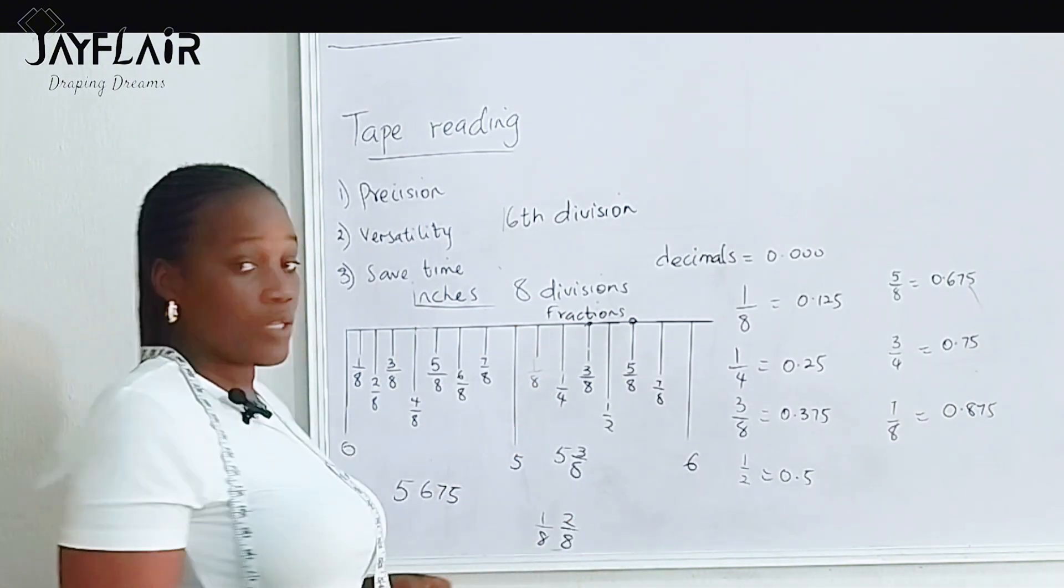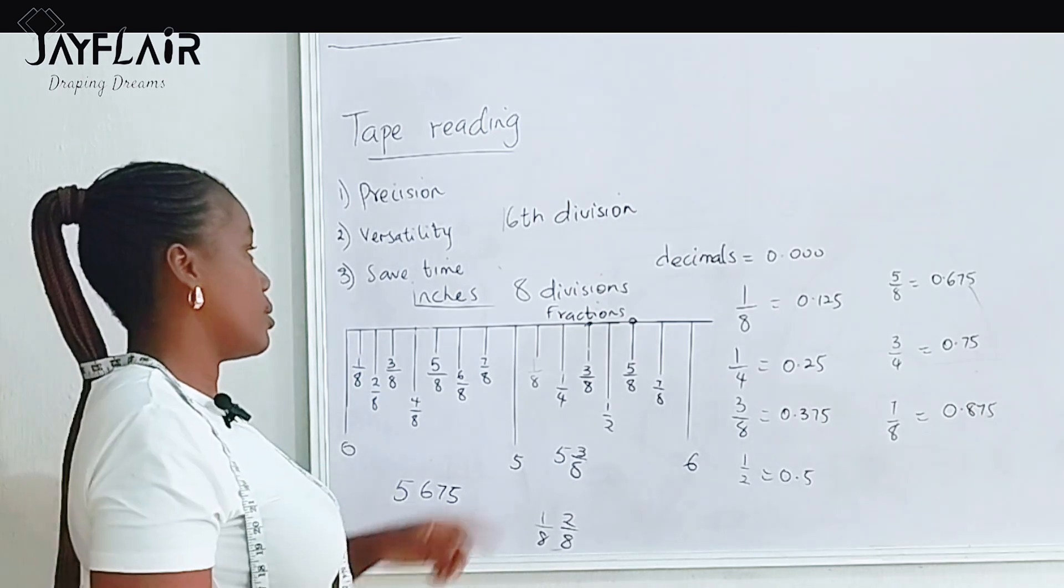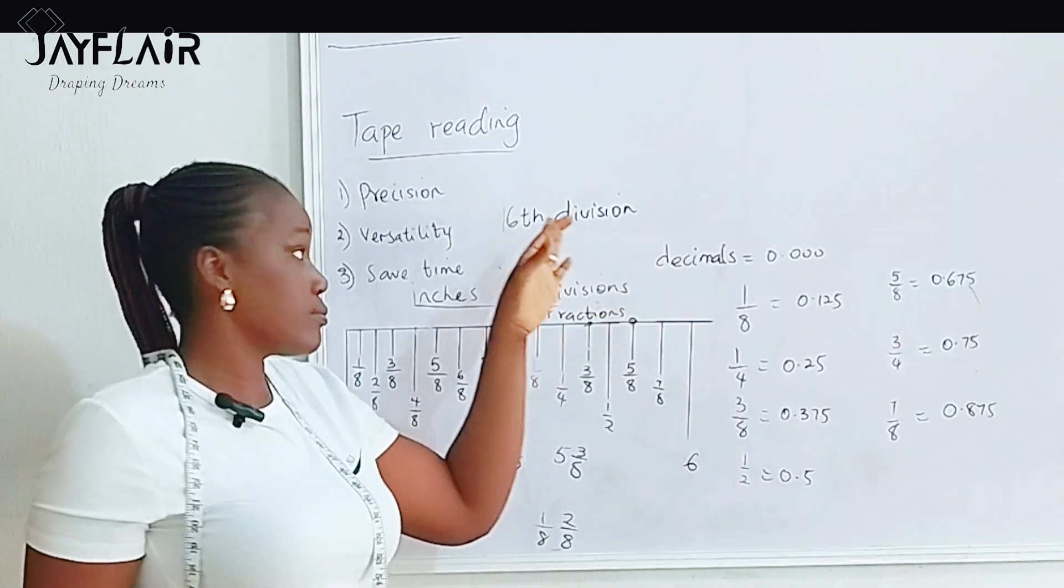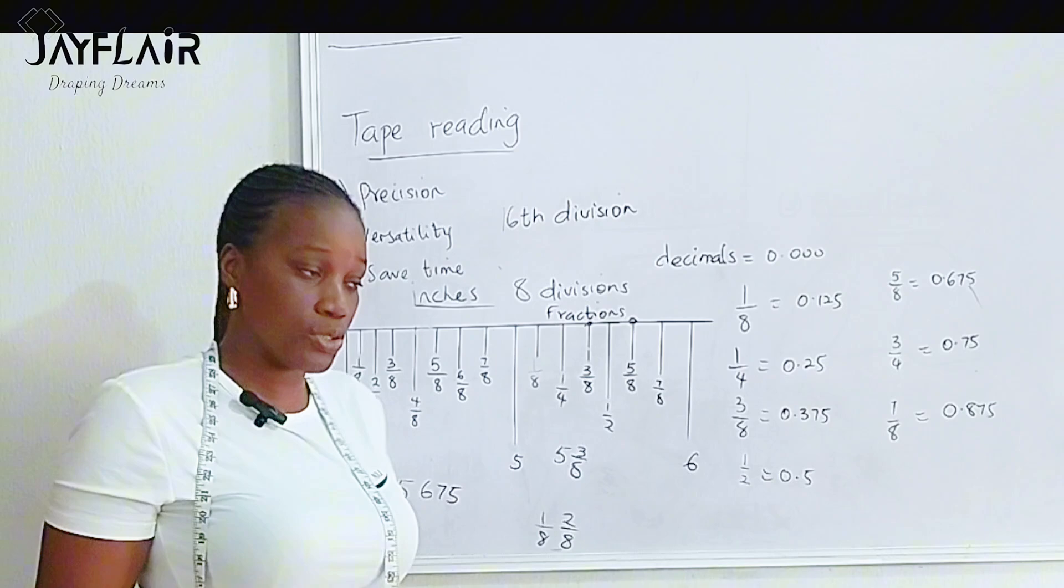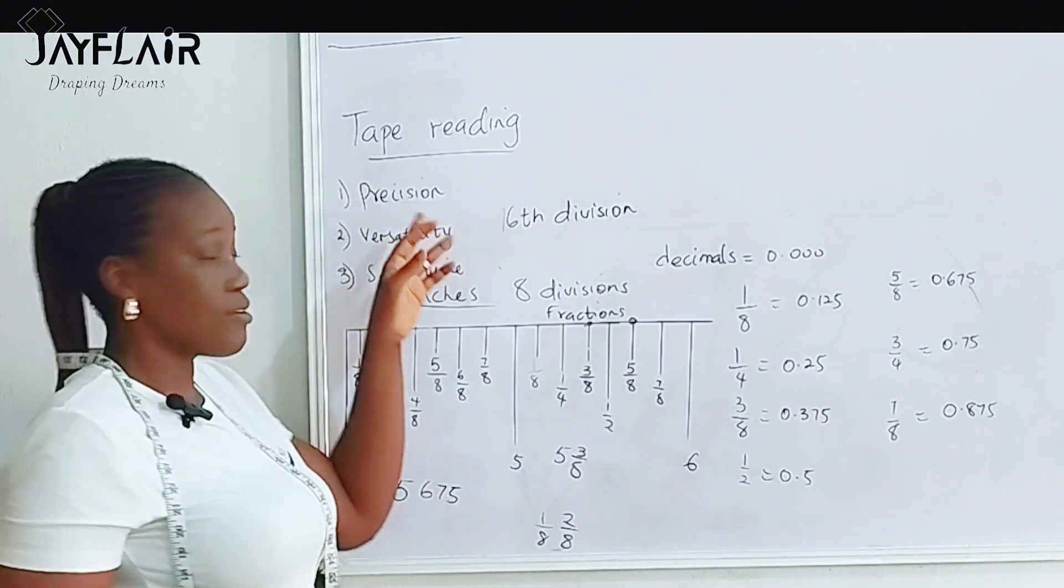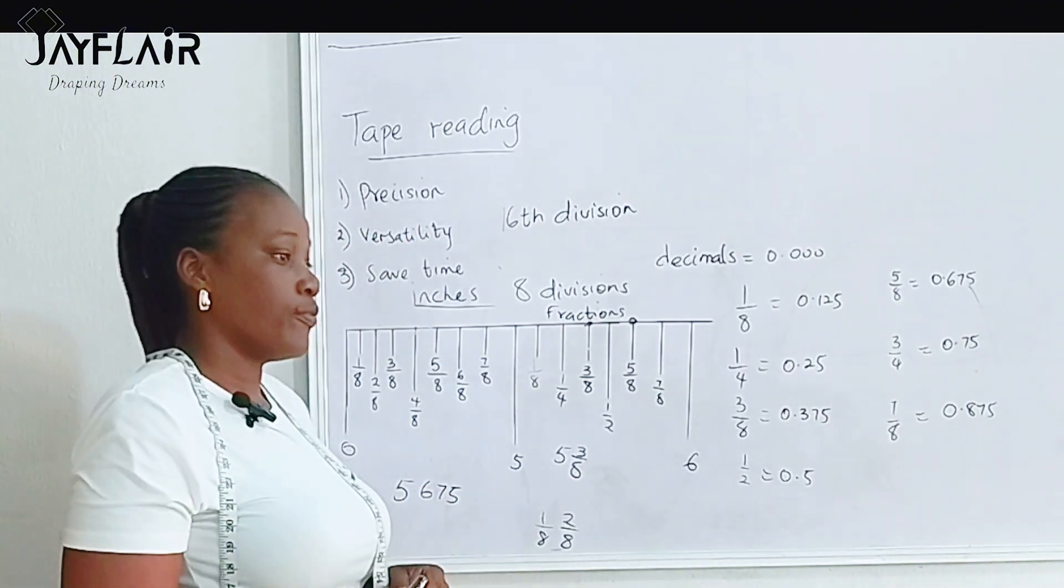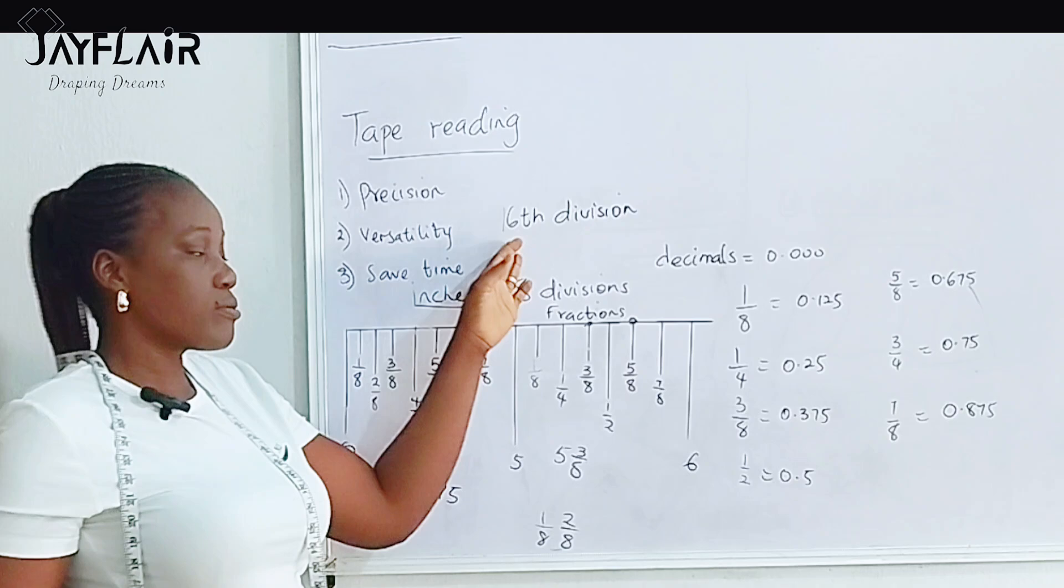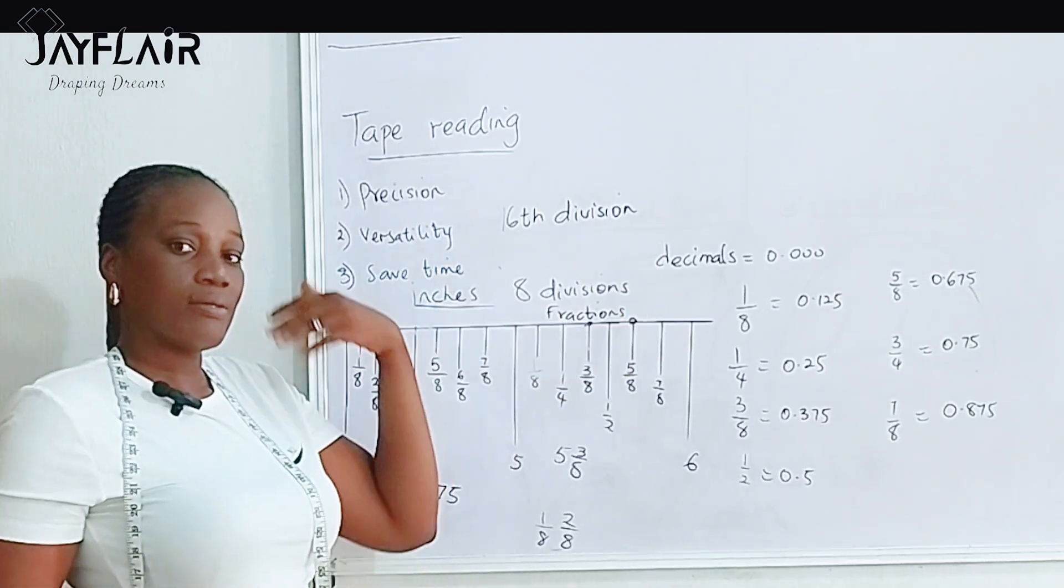As fashion designers, we measurely or usually stop at the 8th division. But architects, engineers, civil engineers, they go further towards the 16th, 32nd, 64th division because they need to be very, very precise in their work. So they use from 16th and above.